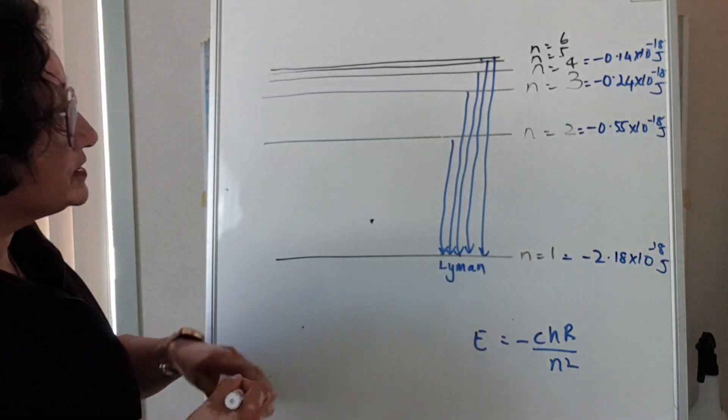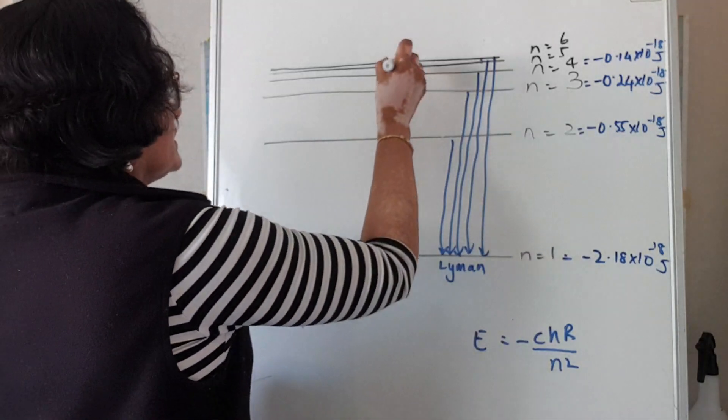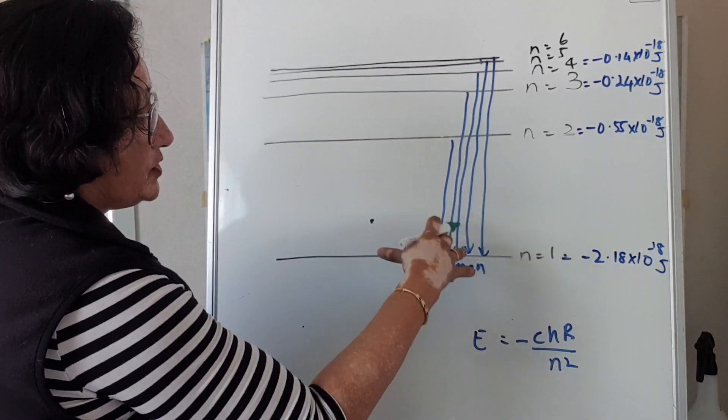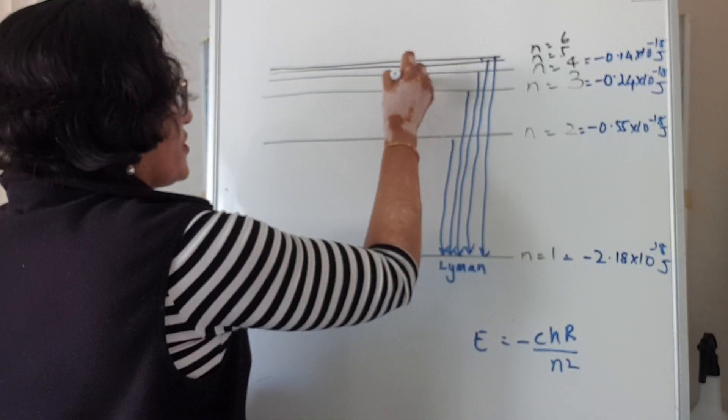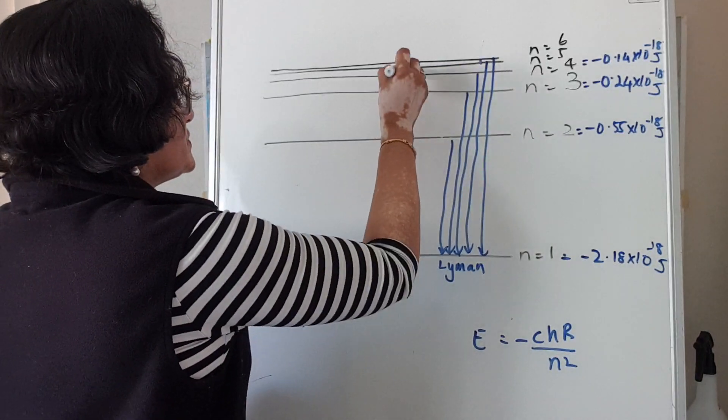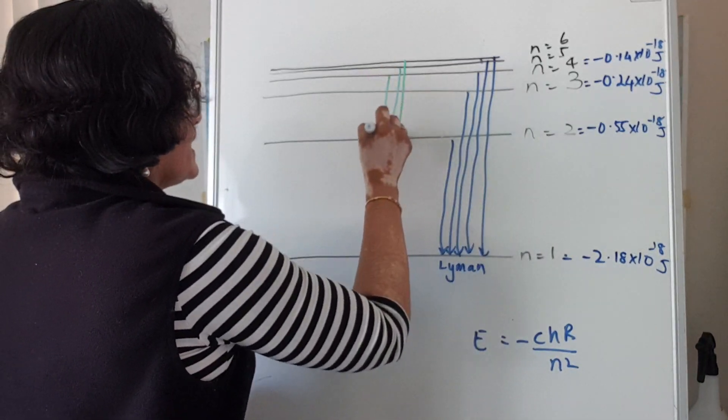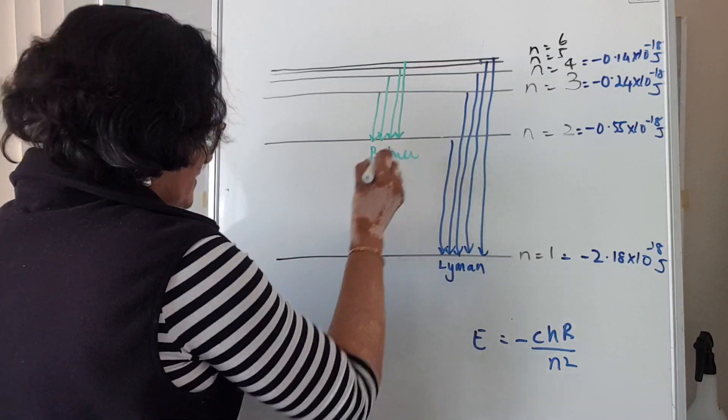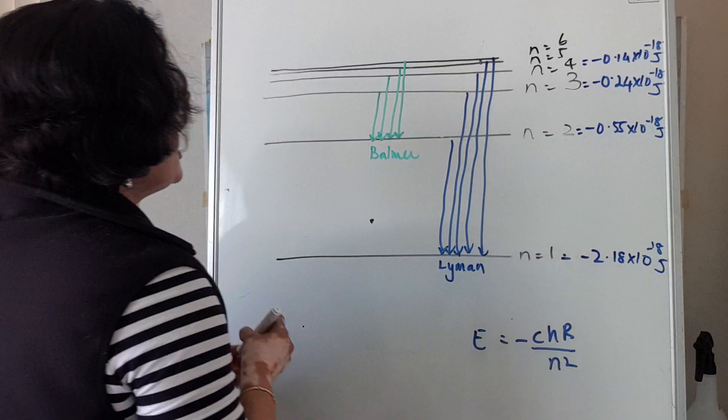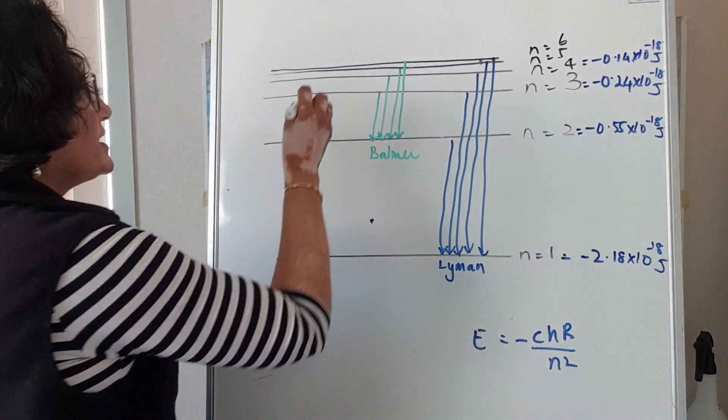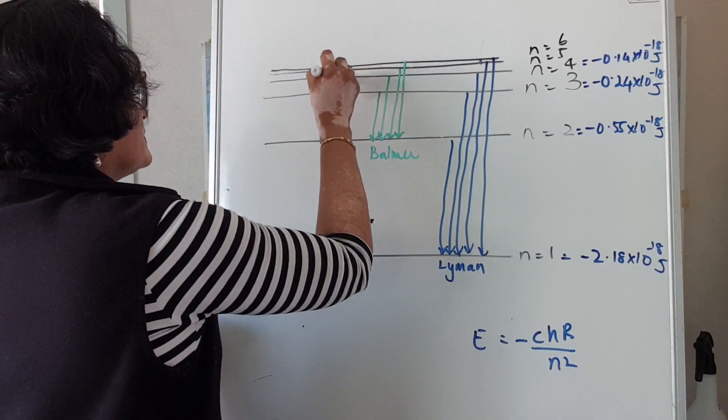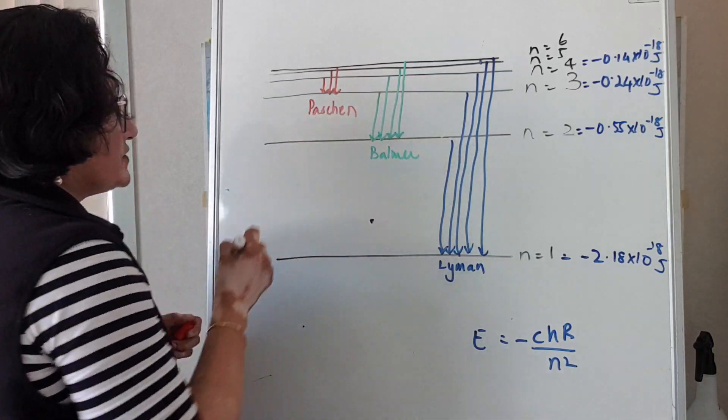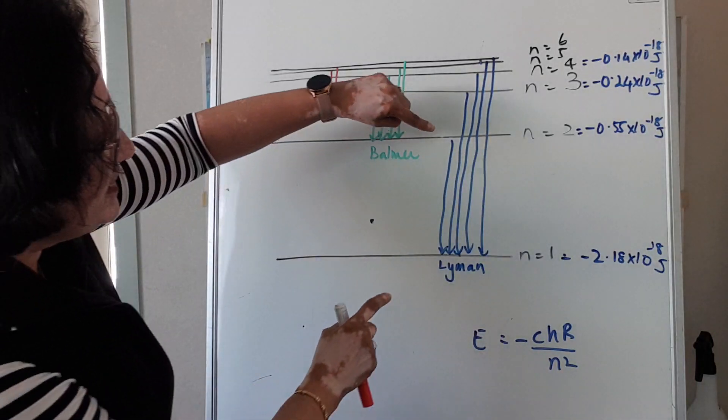All drops to n equals 2, they give out photon of energy which equals hf and they all come to the ultraviolet. Now for n equals 2, this is what Balmer saw and this is all in the visible part of the spectrum and this is the Balmer series. And the Paschen series is all drops to n equals 3, and this is in the infrared part of the spectrum.